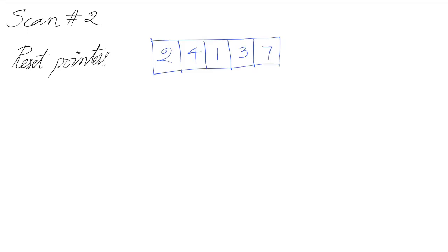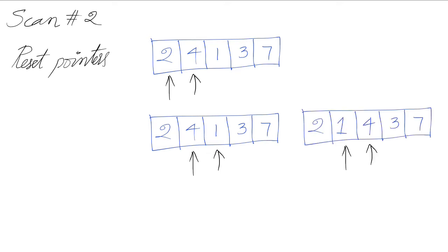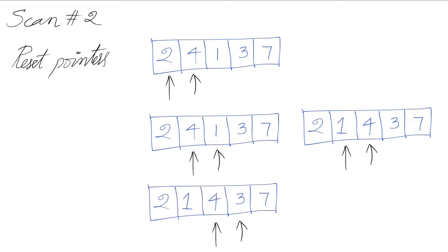We begin scan number two. At the start of scan two, we reset the pointers to the beginning. We compare the first two elements — they are in the right order, so we don't need to do anything. We move the pointers to the right by one and compare four and one — they are out of order.